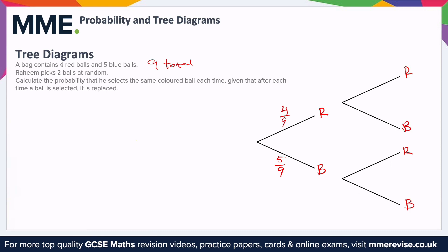The next branches are going to be exactly the same because we're told the balls are replaced. So this is going to be four ninths, five ninths, four ninths, and five ninths. We want drawing the same coloured ball each time, so that's getting a red then a red, or a blue then a blue.